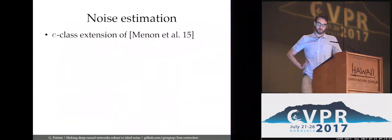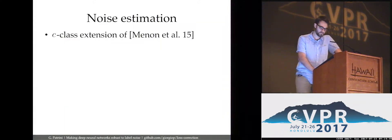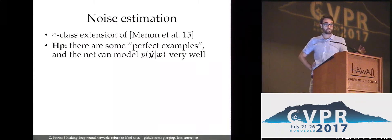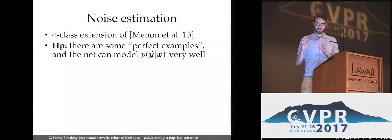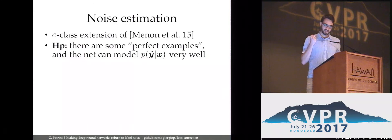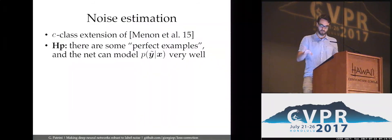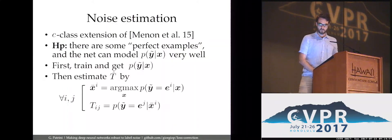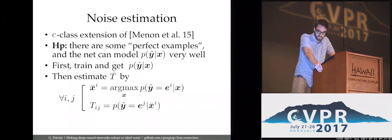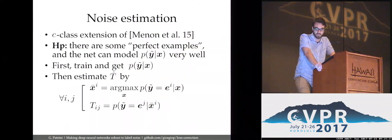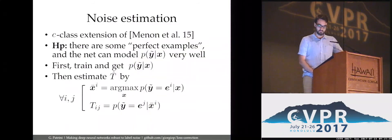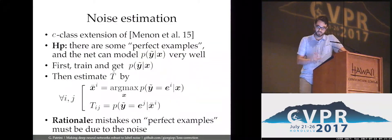How do we get T? That's the main point. We extend a technique due to Menon et al. We need to assume two things: first, there must be some perfect examples in your dataset — images that are stereotypical and very hard to mistake. Second, your model must be powerful enough to approximate the noisy conditional distribution well, which we can train because we have the noisy labels. We train the neural net on the noisy data, then search for perfect examples via argmax over the dataset, and use those to probe the noisy conditional distribution to fill up the matrix T. The intuition: since there are perfect examples, any mistakes on them must be due to noise and nothing else.